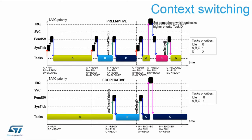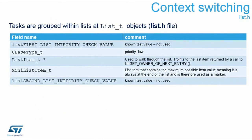Tasks are organized in lists whose definition can be found in the corresponding header file. Each list contains a test value to validate it hasn't been overwritten, a priority, pointers to sequential items, a mini list item, and an integrity check value to verify the list is intact.